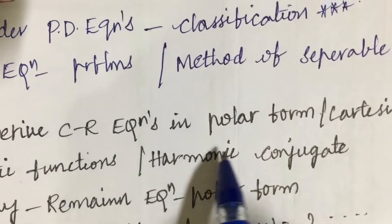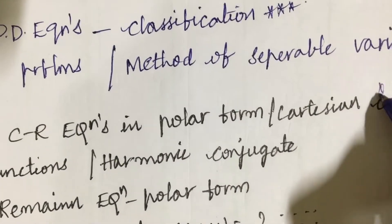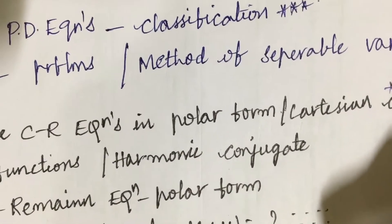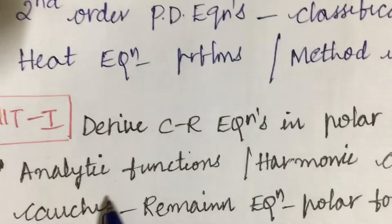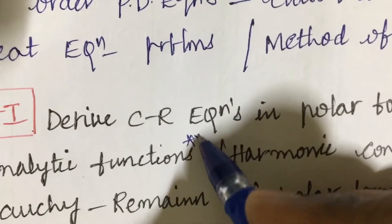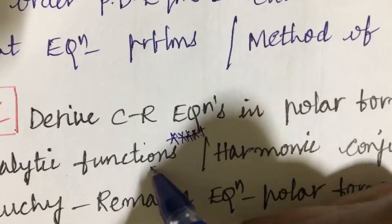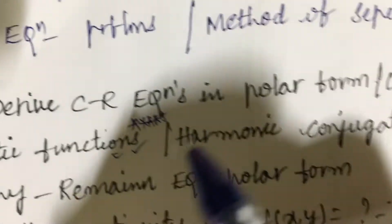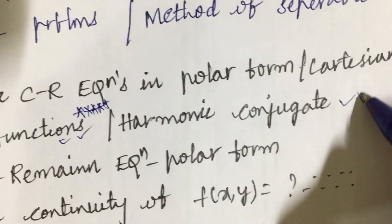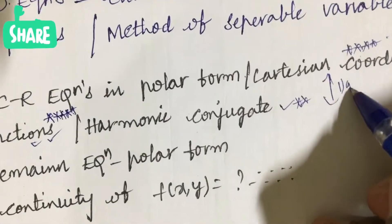The first and foremost gunshot question I can give you is: derive CR equation in polar form as well as Cartesian form. As per the COVID pattern, you are going to get two questions from unit one. Analytic functions is a very important and gunshot question for sure. You need to work out several problems and the harmonic conjugate may also be one of the questions.